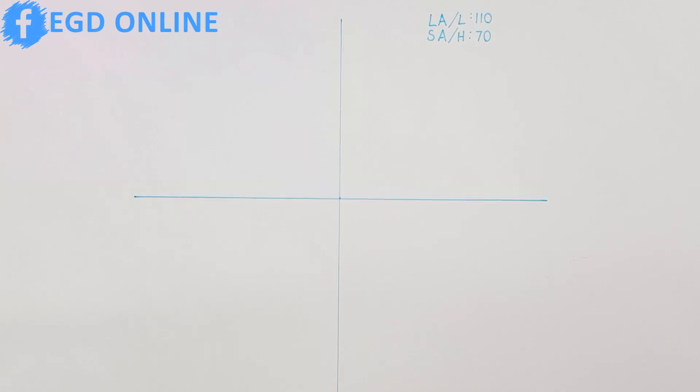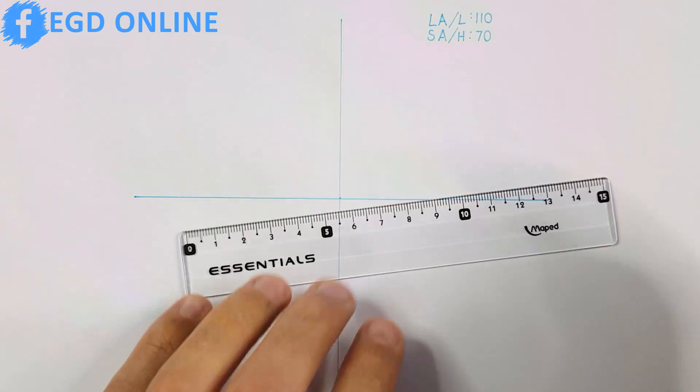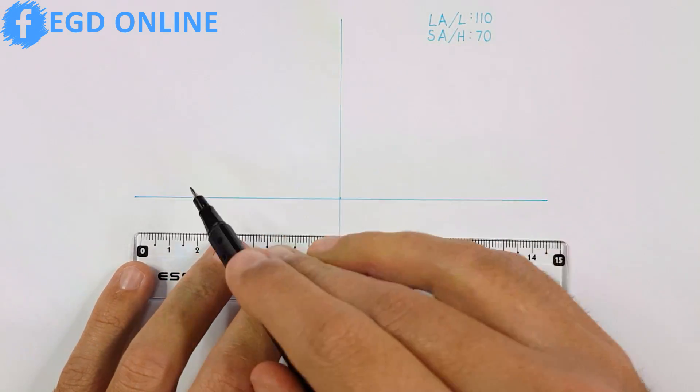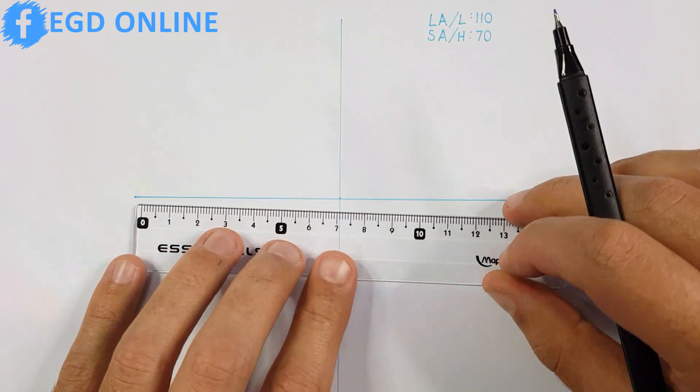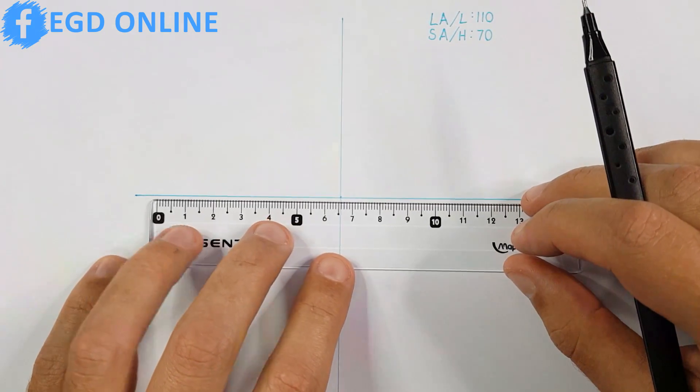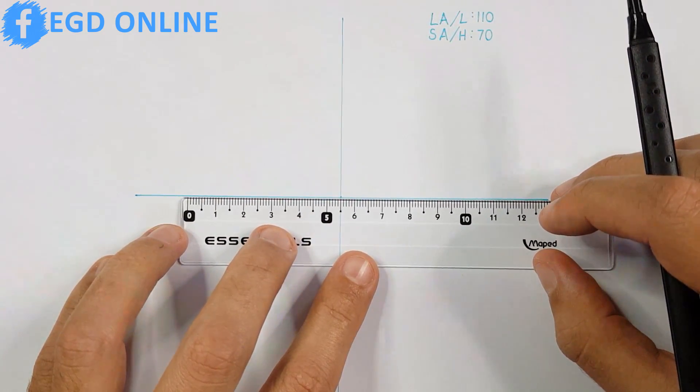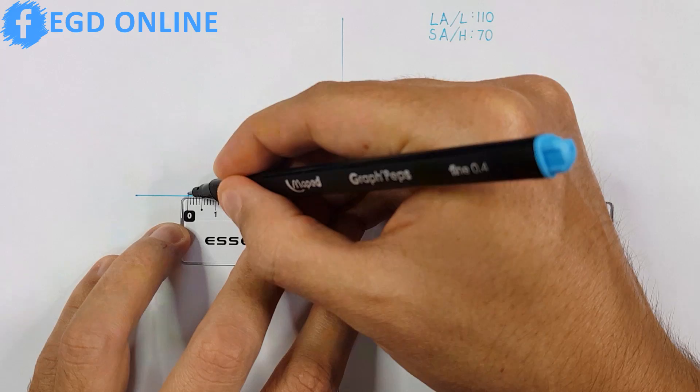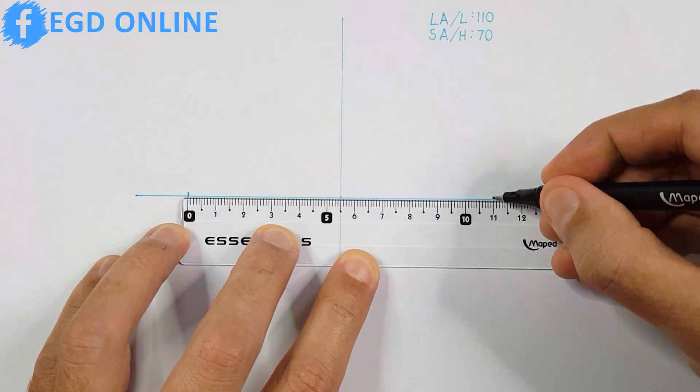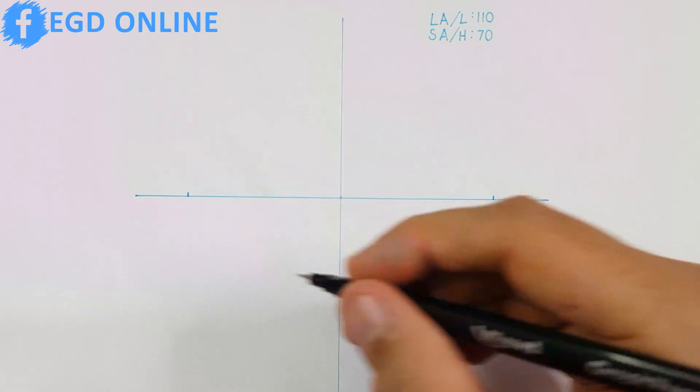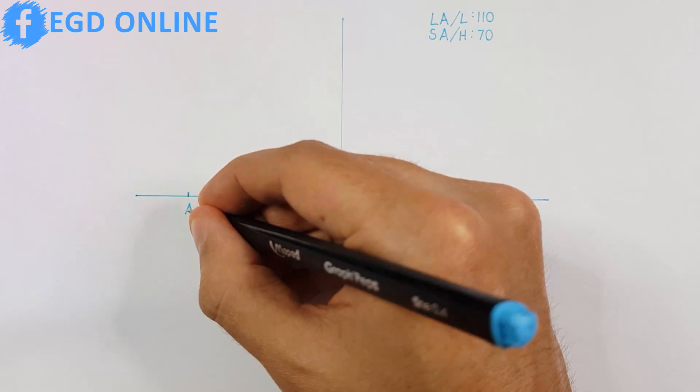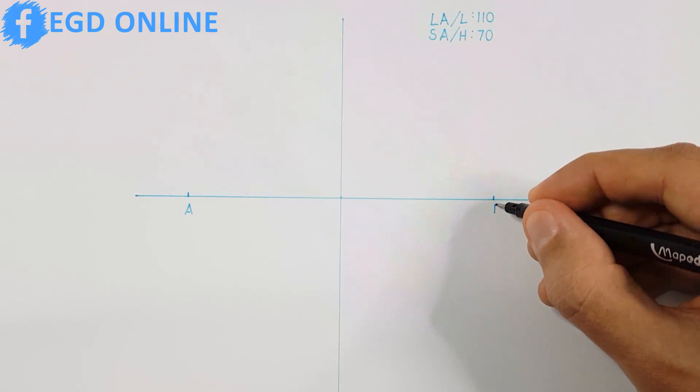I have already drawn the two axes and note that I'm using a blue pen to show my construction lines. First I will determine my major axis. For the purpose of this video my example will be 110 millimeters for my major axis. Note that different terms can be used for major axis like long axis or length. I will then label my major axis as A and B.